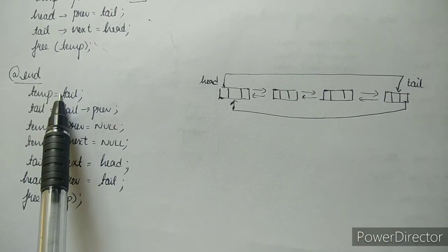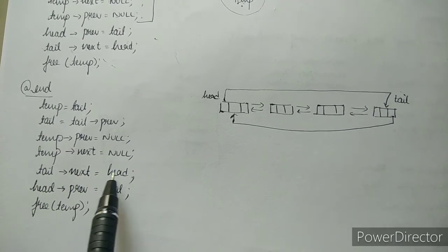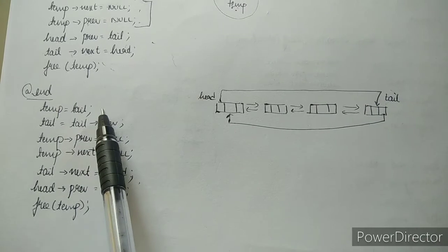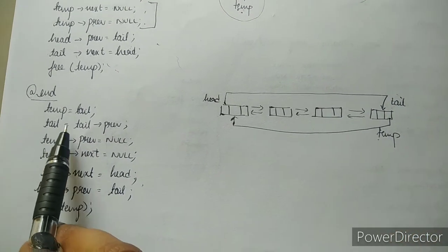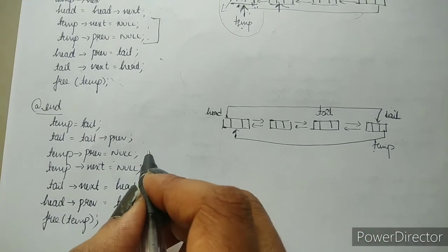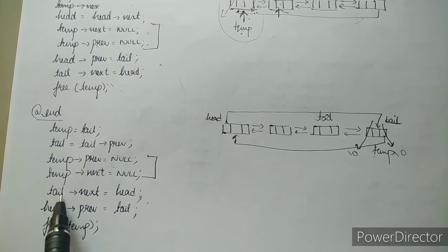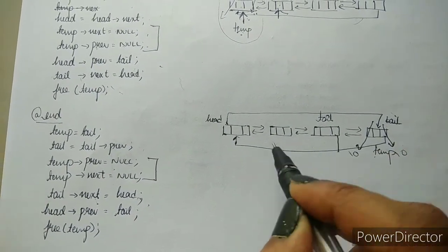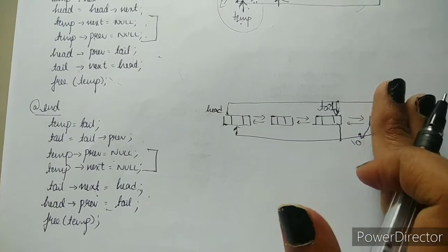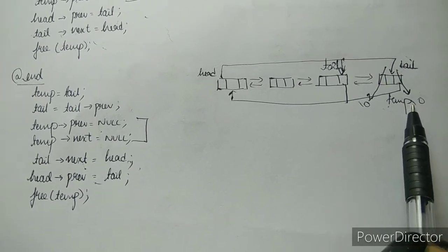Now we'll see how we delete a node at the end. The code: temp is tail, tail is tail's previous, temp's previous is null, temp's next is null, tail's next is head, head's previous is tail, and free temp. We make temp point to tail. Then tail is shifted to the previous node of tail. Temp's previous and next are set to null, so it no longer points to any node in the linked list. Tail's next points to head and head's previous points to tail, restoring circular links. The isolated node's memory is deallocated using free temp, and hence the node is deleted at the end.